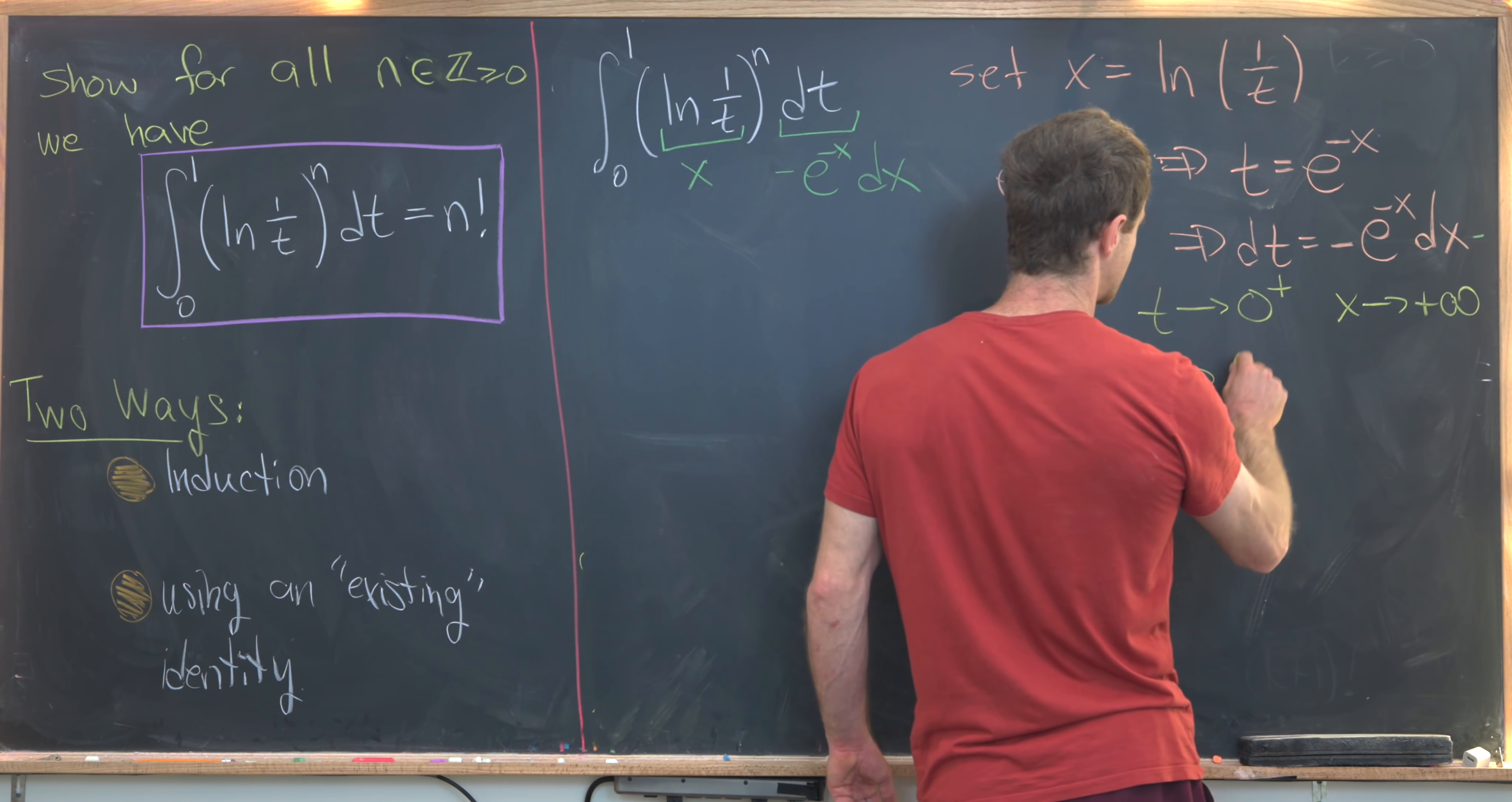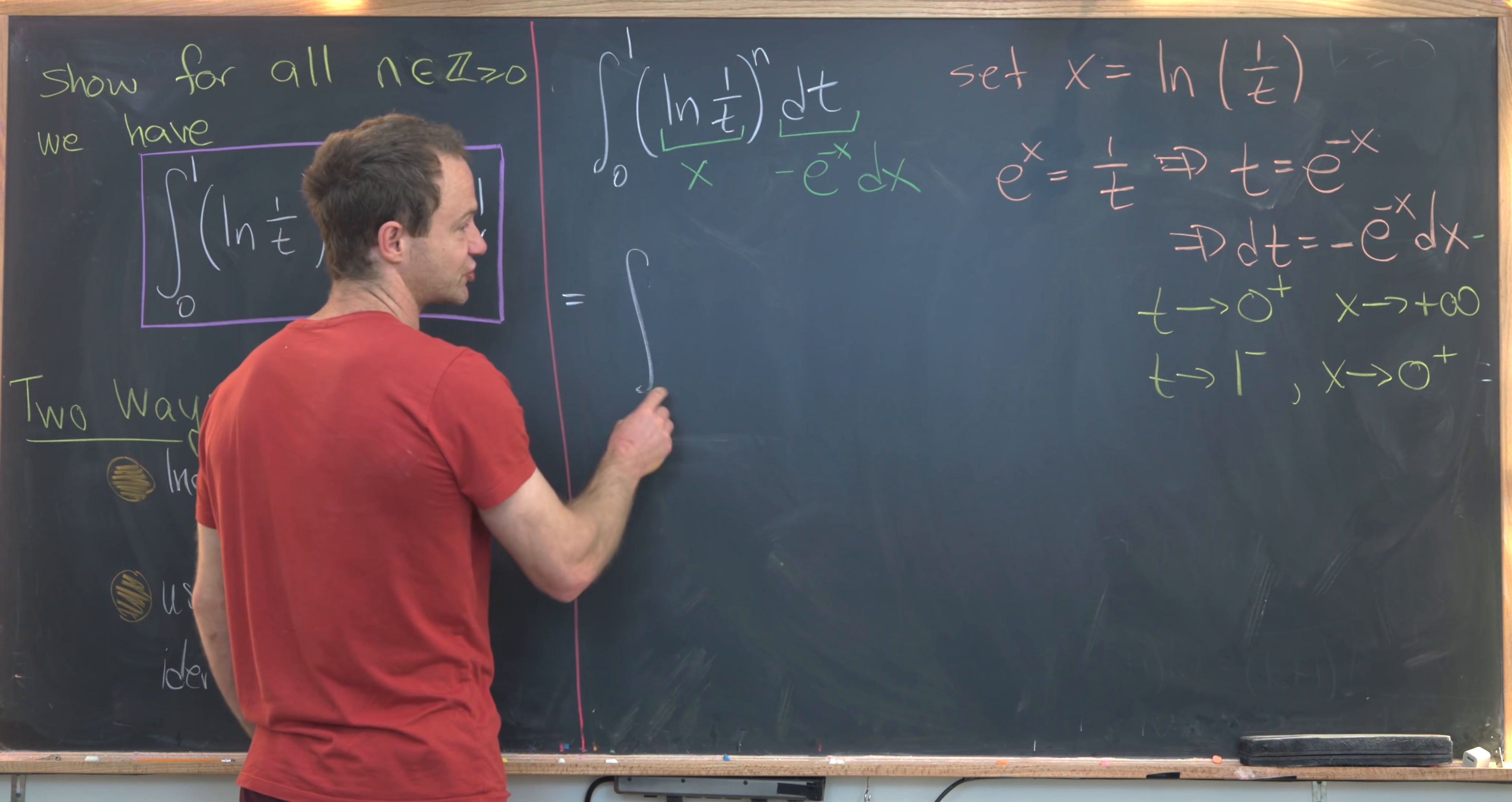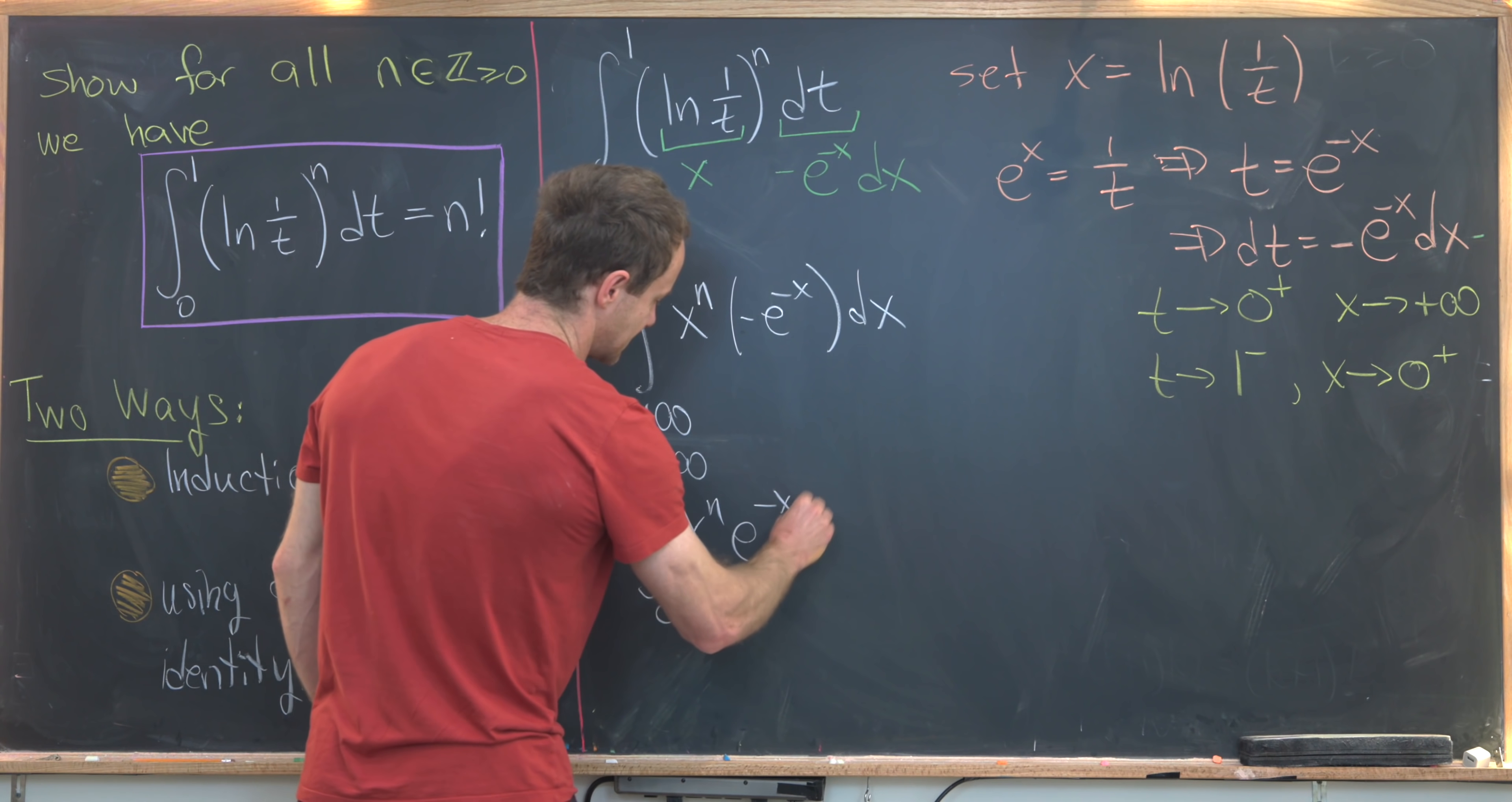Furthermore, as t goes to 1 from below, we see that 1 over t becomes 1. e to the x equals 1 when x is equal to 0. So that tells me that x is going to 0 from above. So that means that we can change our bounds of integration pretty easily. So this is going to be the integral starting at positive infinity and ending at 0. And then we'll have x to the n times minus e to the minus x dx. Now we use this minus sign to switch the bounds of integration. That leaves us with 0 to infinity of x to the n times e to the minus x dx.